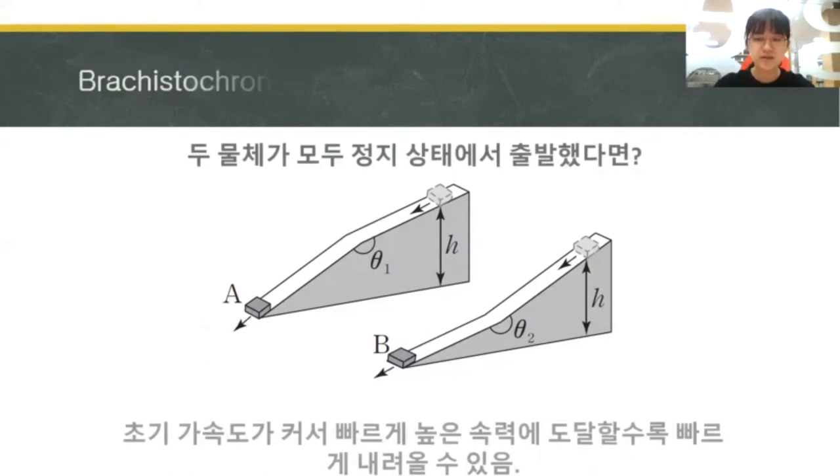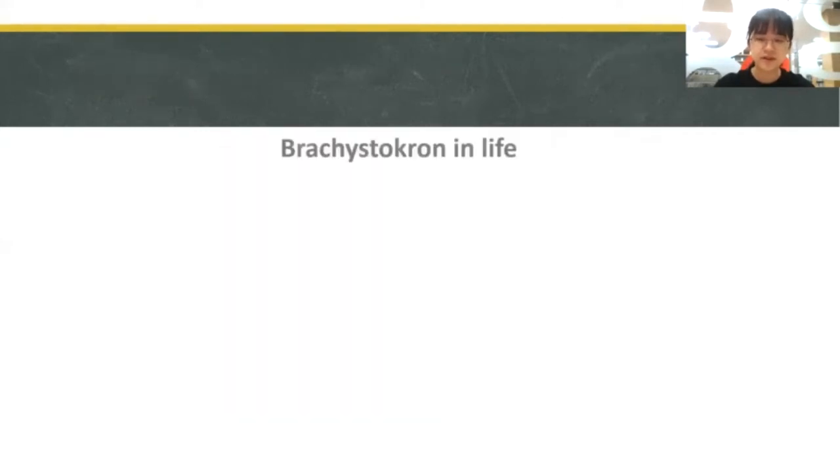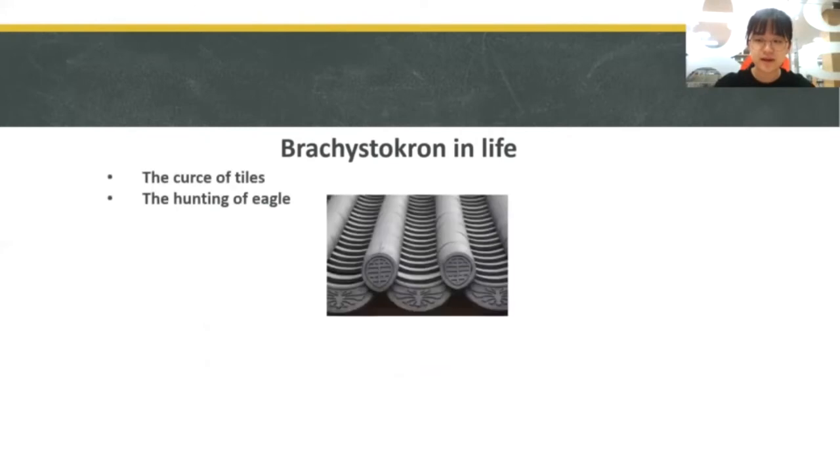The Brachistochrone curve can be found quite often in our daily lives. For example, Niwa is a type of roof tile that was used for centuries in Korean tradition. Korean ancestors made these in the form of cycloids, so as to let rainwater drain quickly and protect buildings from degradation. They use mathematical knowledge to solve daily problems wisely.